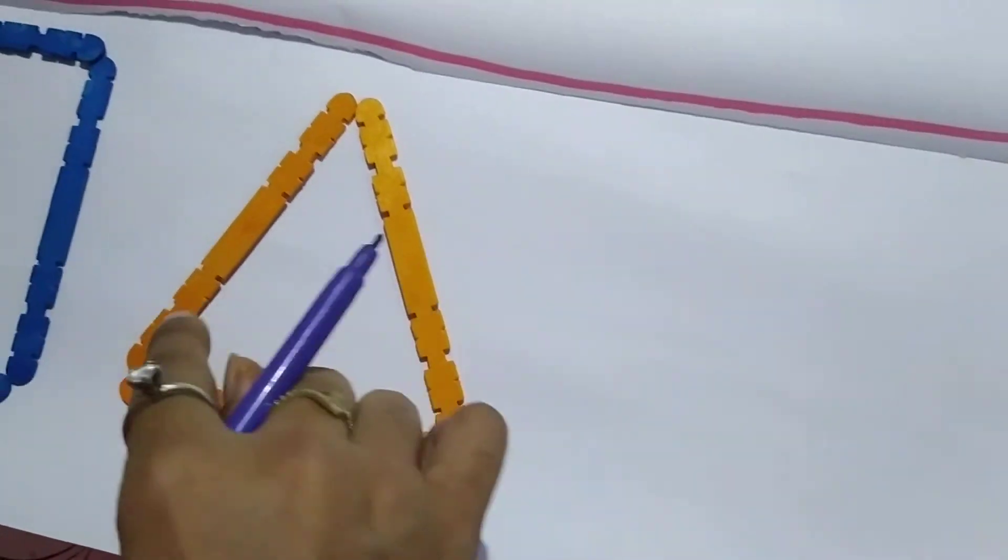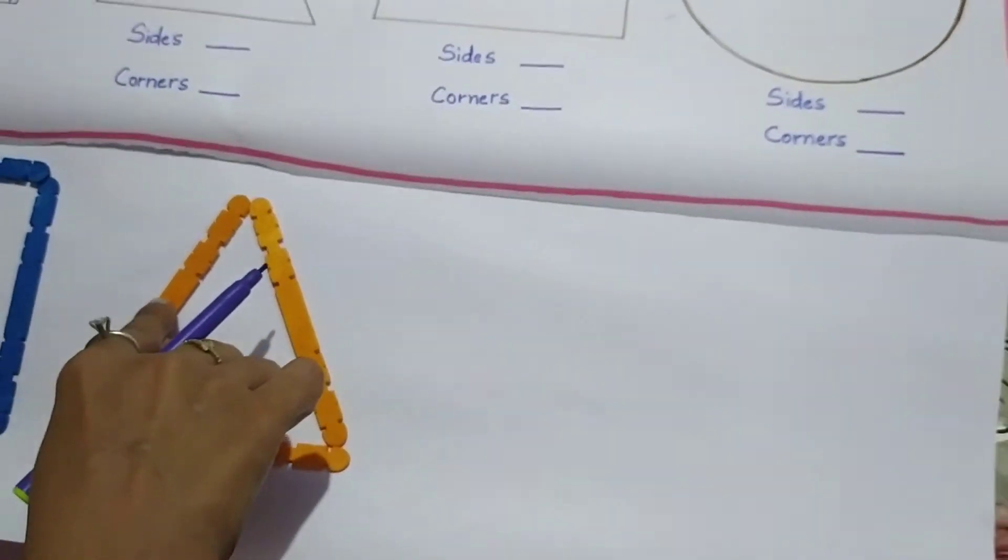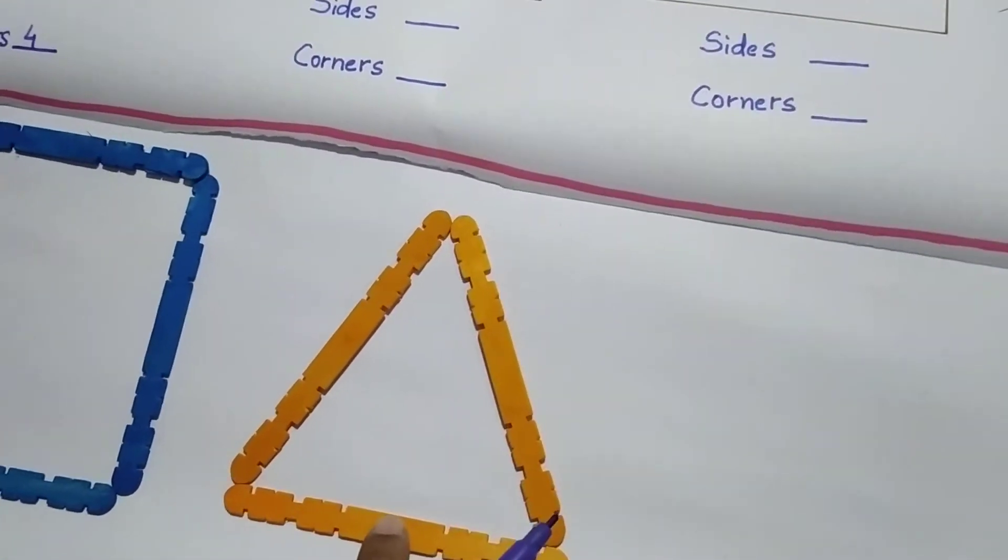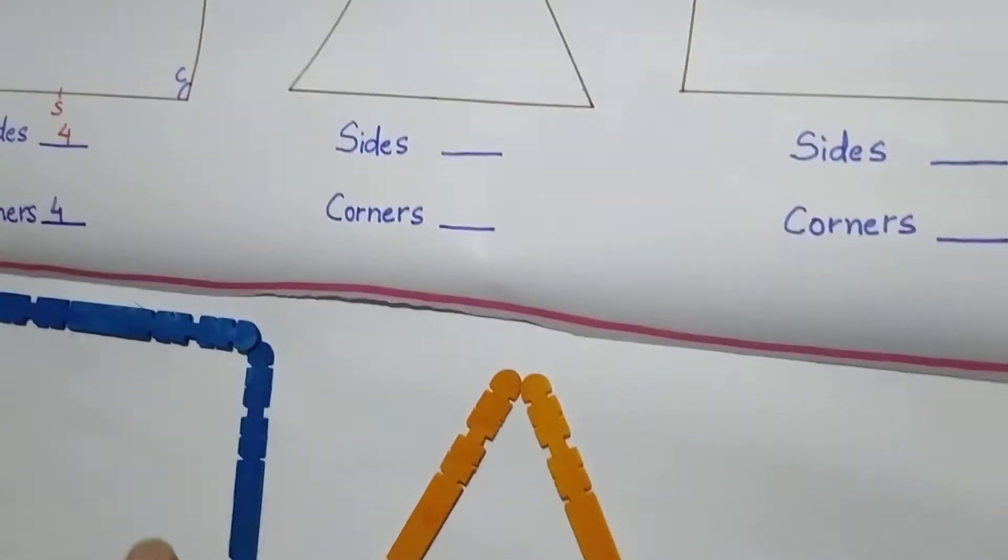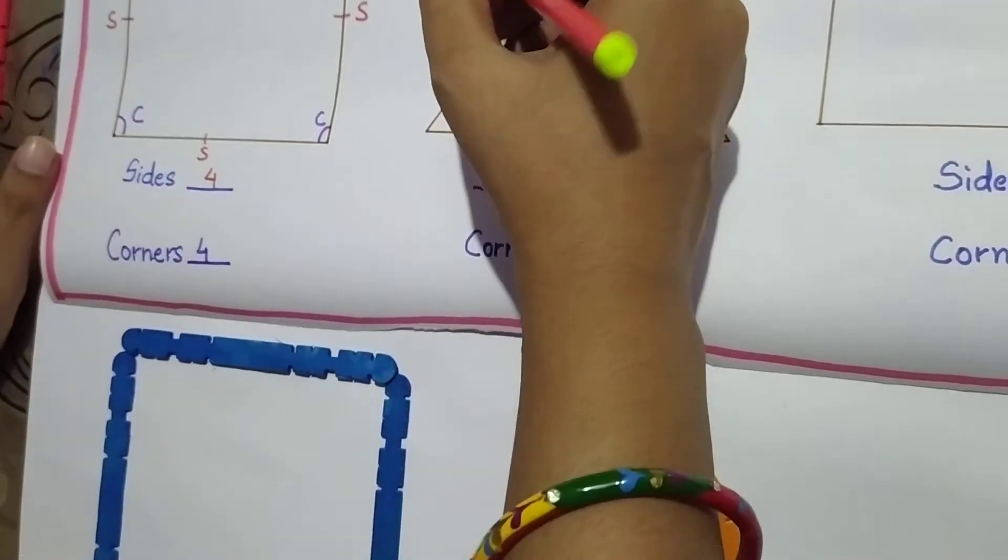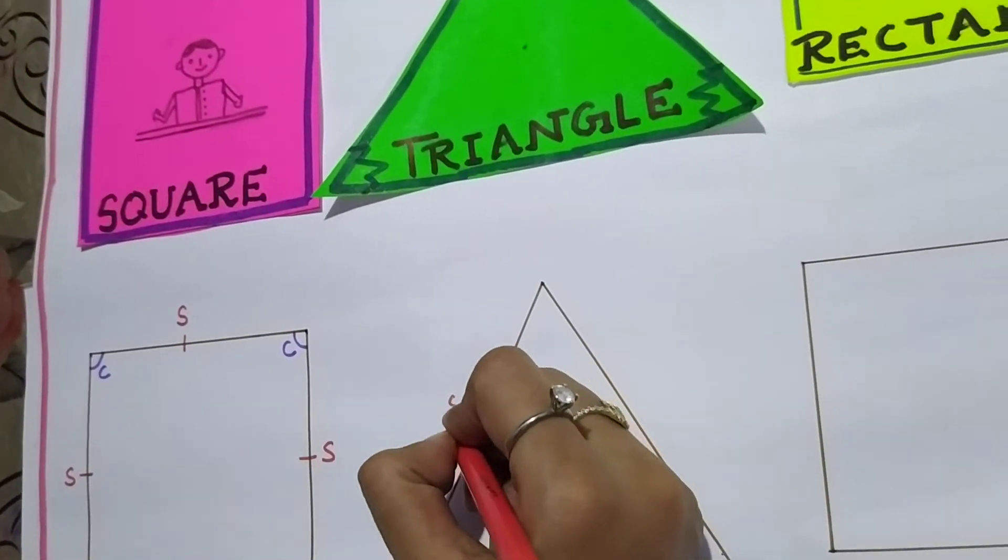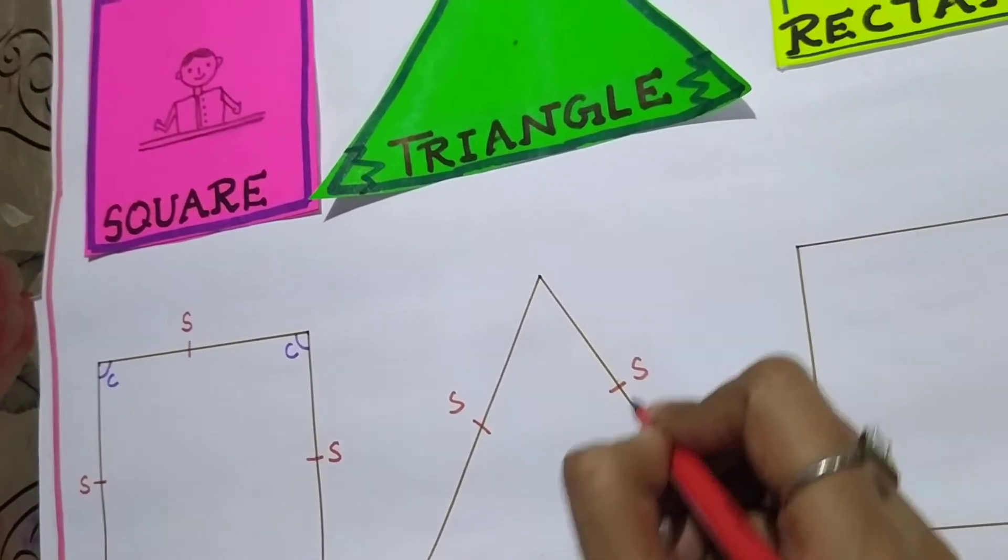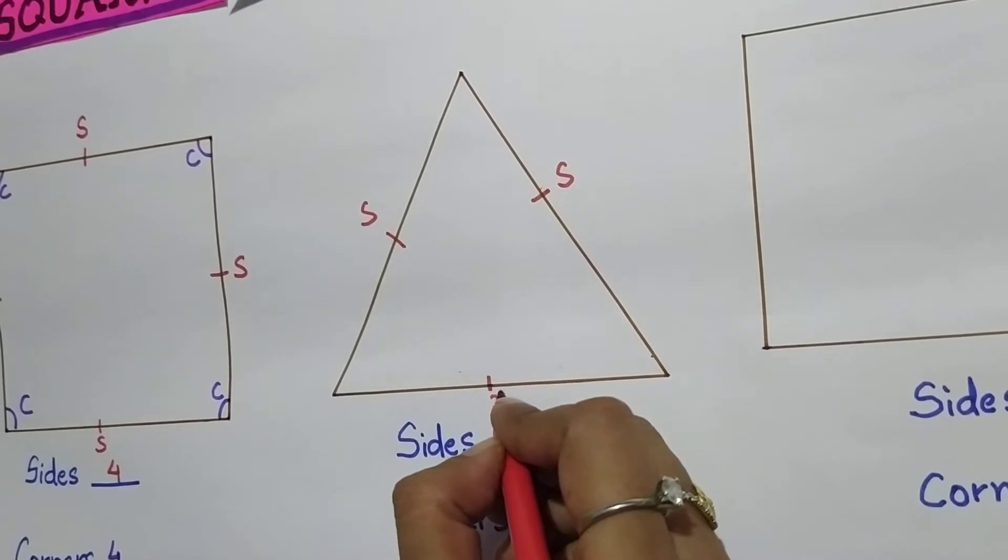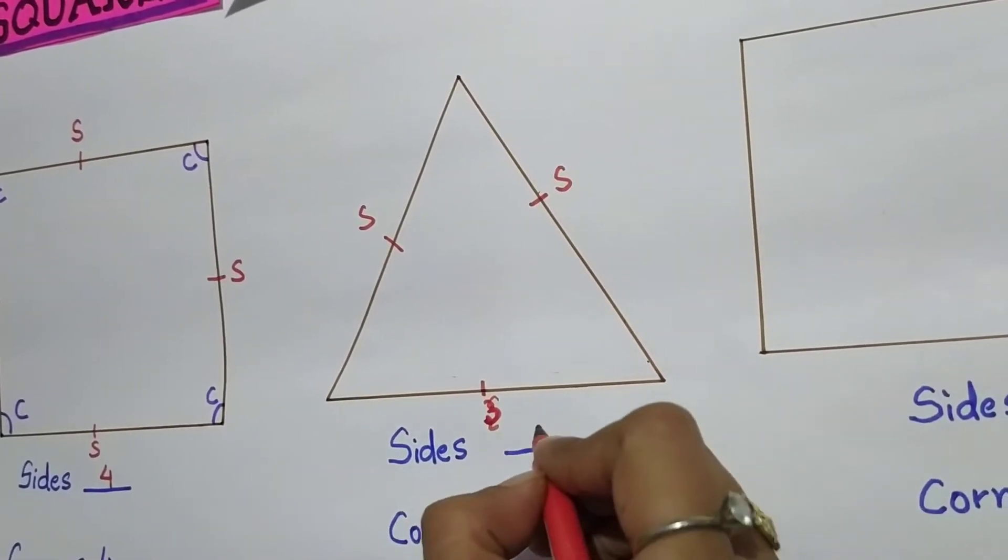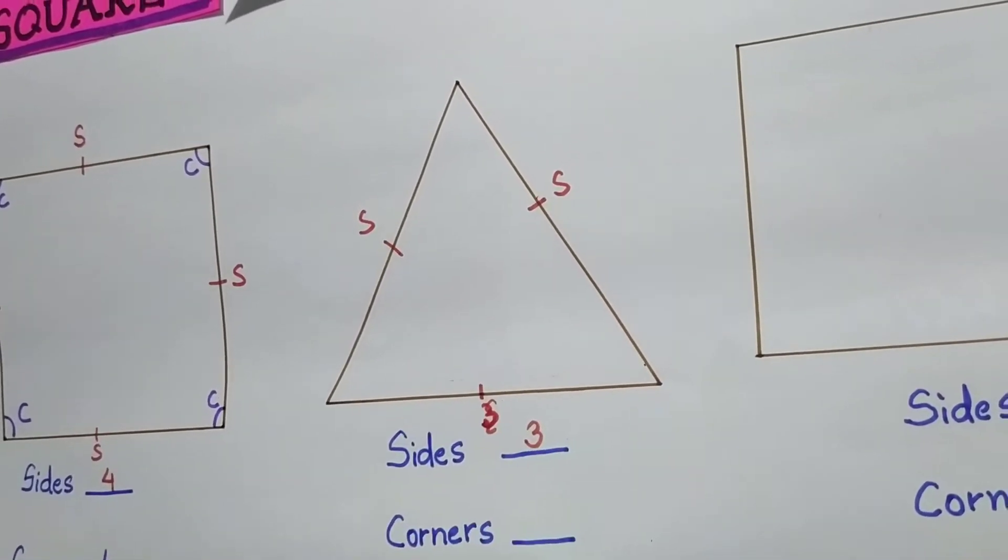So how many lines are there? How many straight lines are in this figure? One, two and three. So the number of sides in a triangle will be three. Number of sides, how do we count? One, two and three.